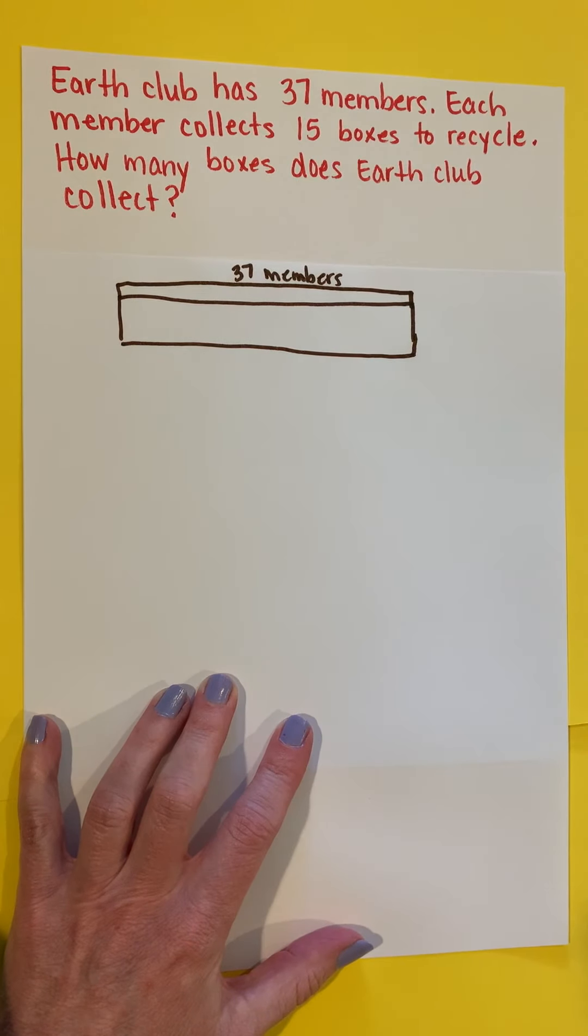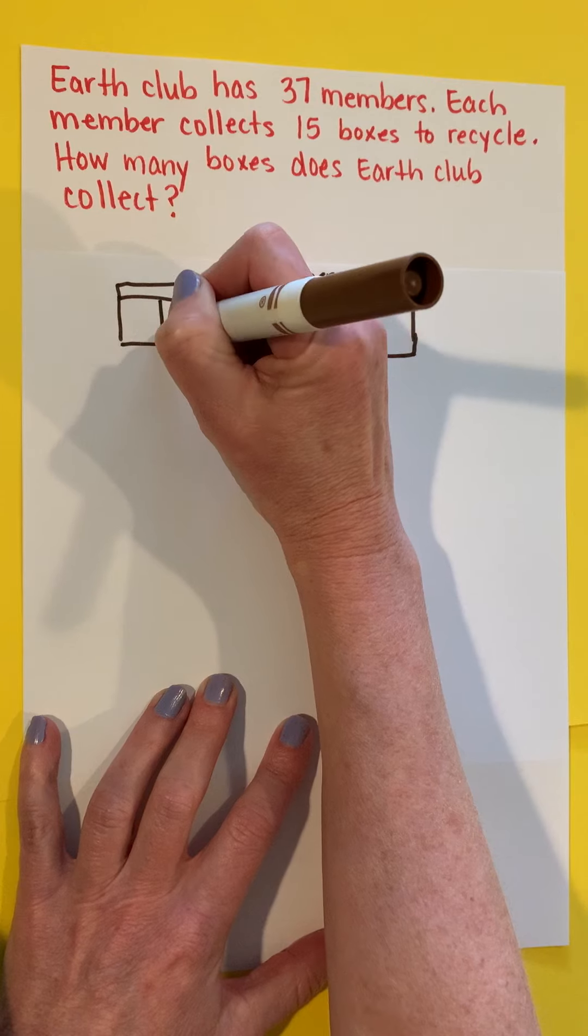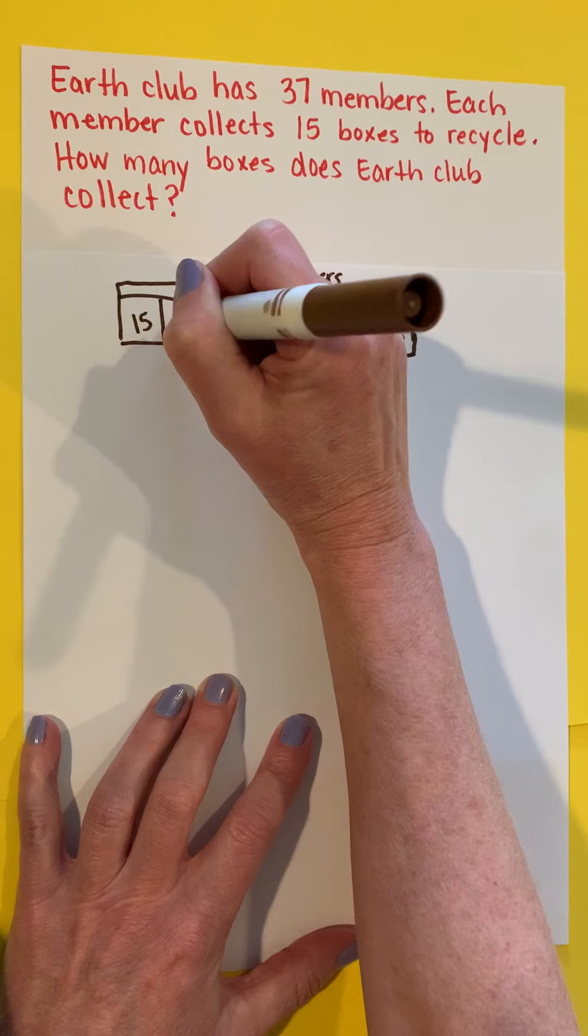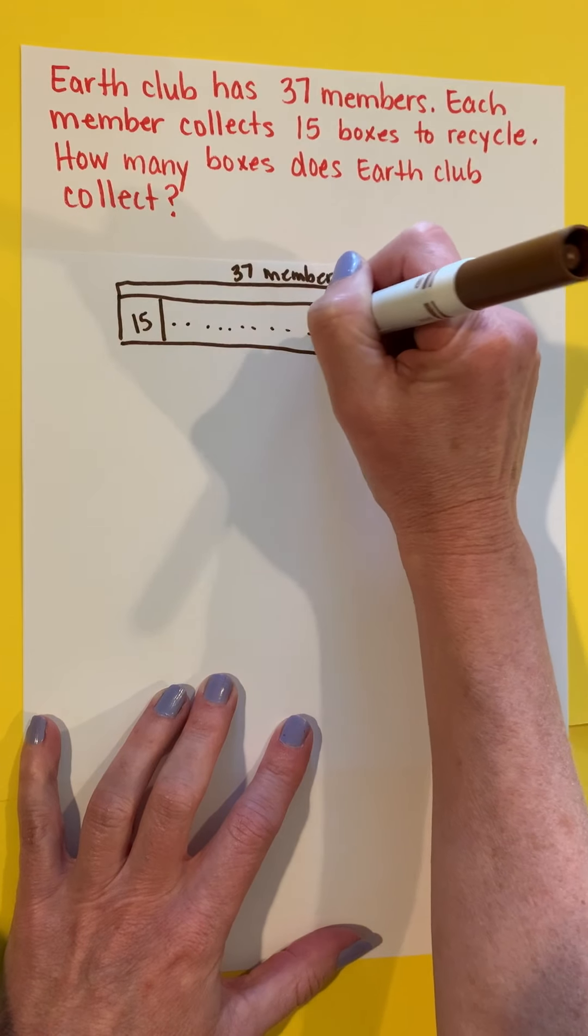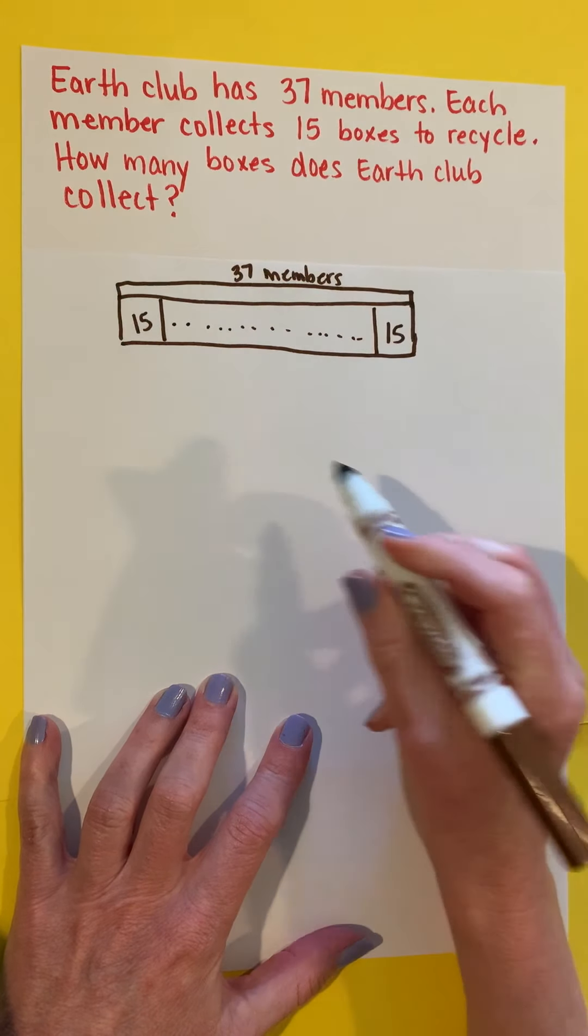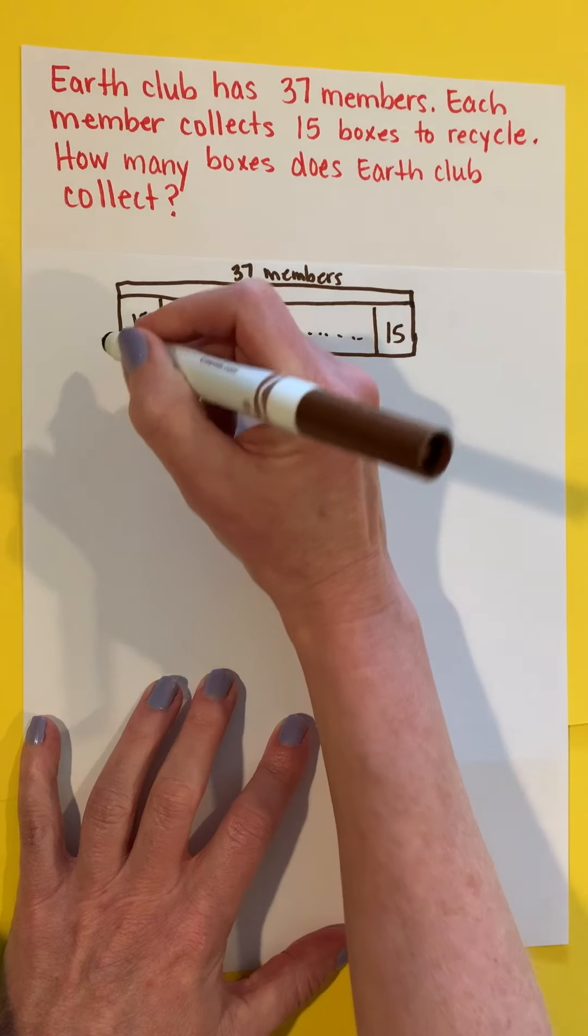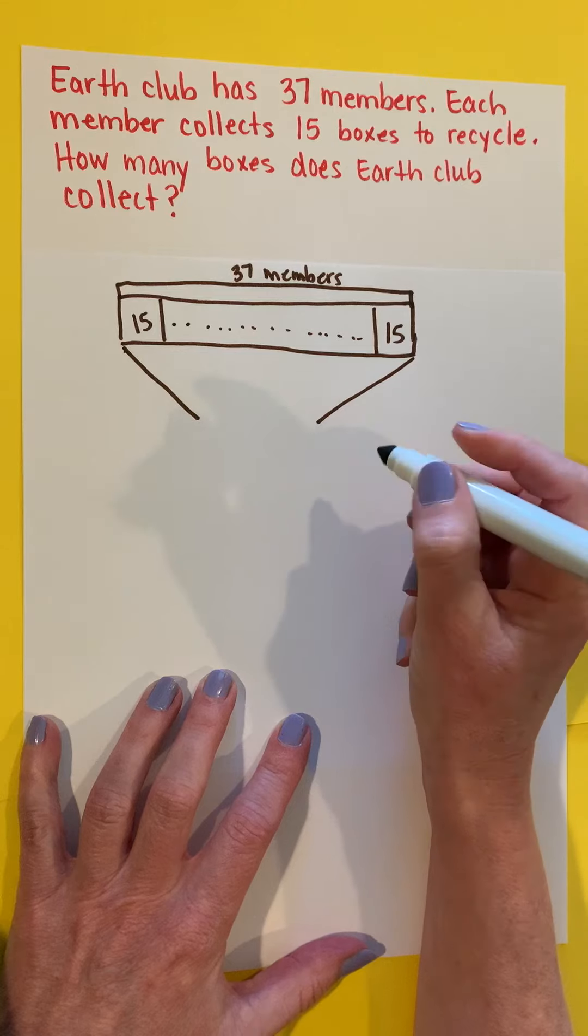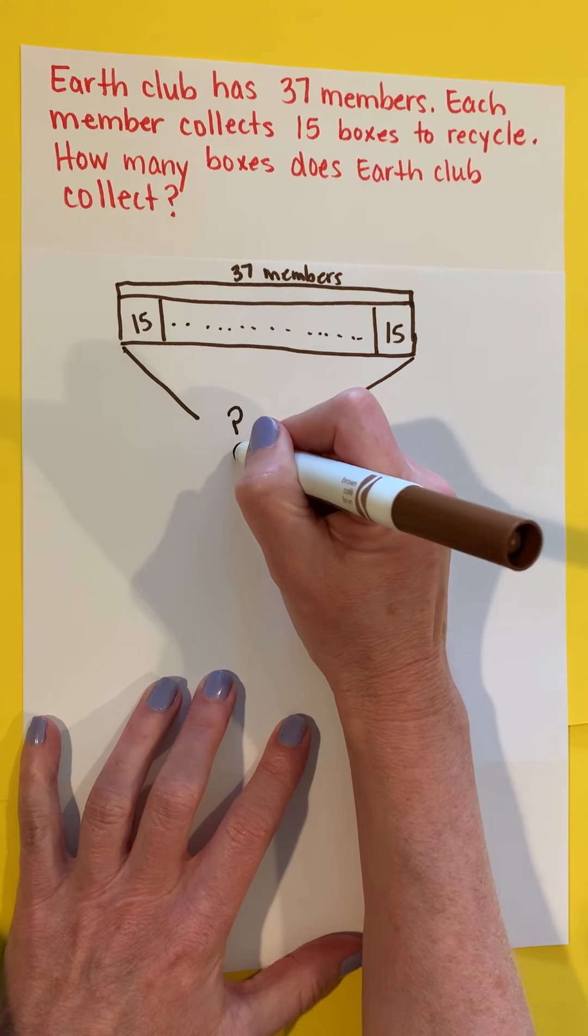I also know that each member collects 15 boxes, so I'm going to represent that like this. This just tells me that all 37 of those members each have 15 boxes. And what I want to figure out is how much the whole is. How many boxes did they have all together?